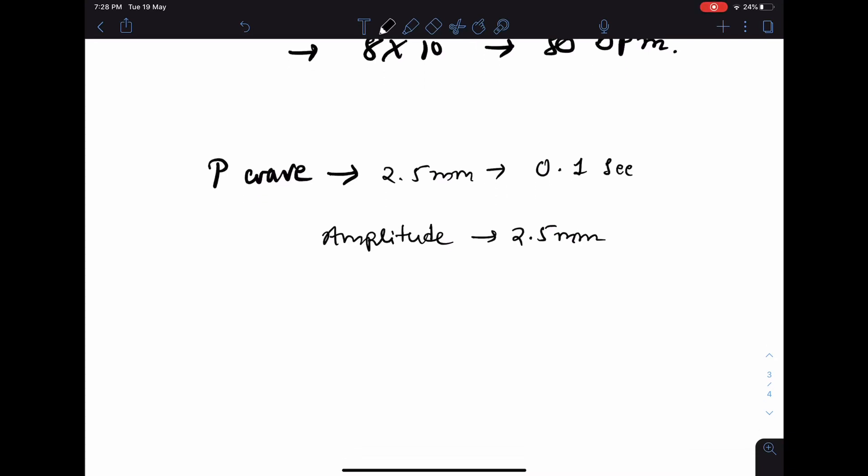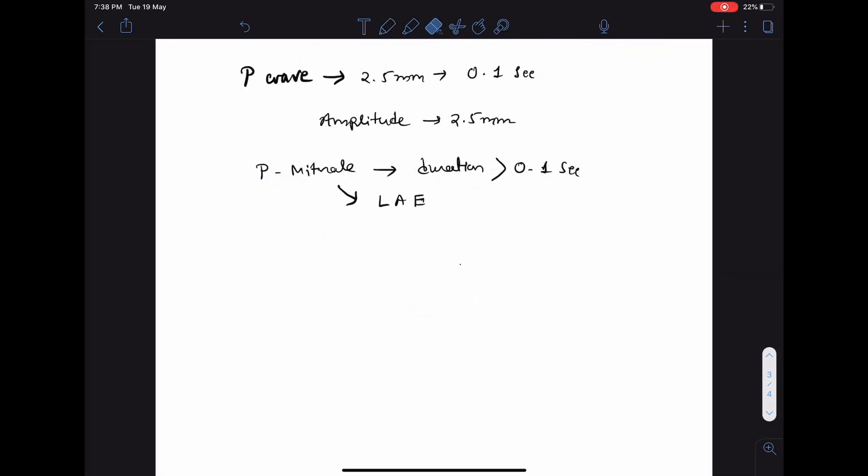Now if the P wave duration is more than 0.1 second, this is known as P mitrale, and it signifies left atrial enlargement. If the P wave amplitude is more than 2.5 mm, it is known as P pulmonale, and this signifies right atrial enlargement. So P mitrale signifies left atrial enlargement and P pulmonale signifies right atrial enlargement.